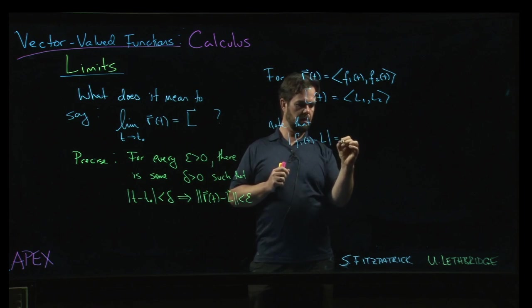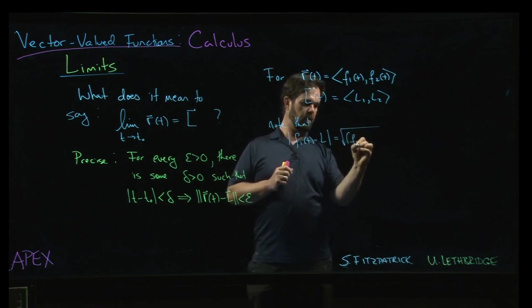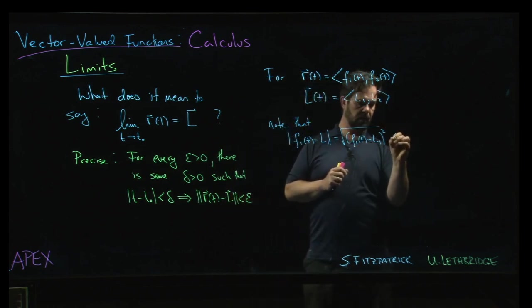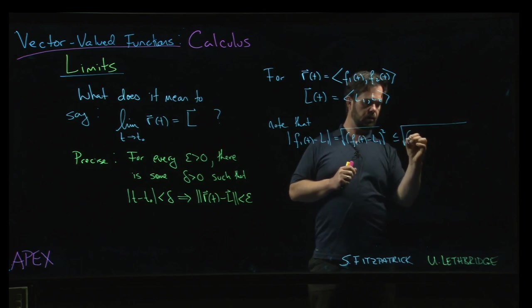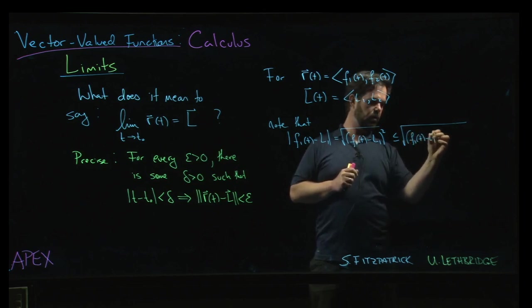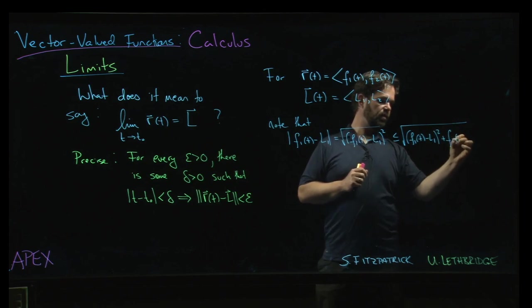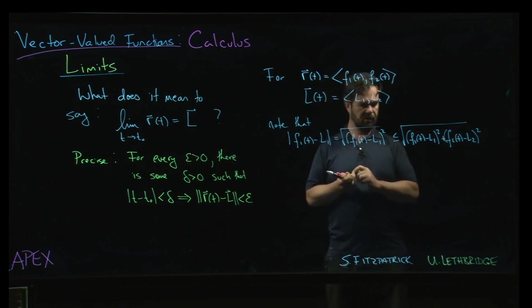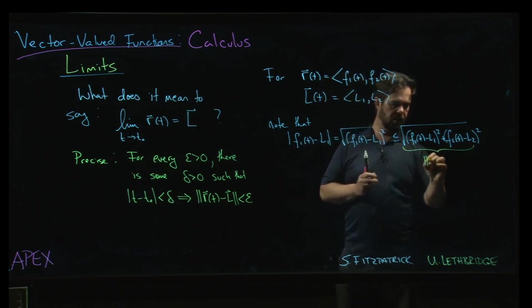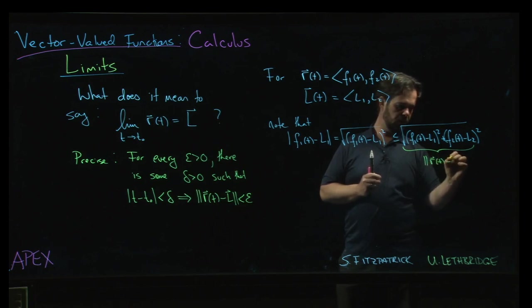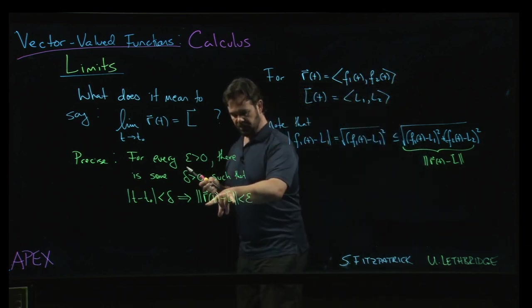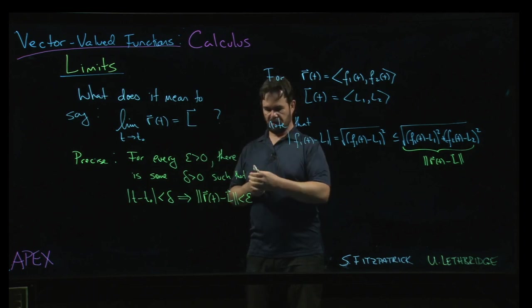Well, that's equal to the square root of [f1(t) minus L1] squared. And that is less than or equal to the square root of [f1(t) minus L1] squared plus [f2(t) minus L2] squared. And this is the magnitude of r(t) minus L. So if we can make this difference less than epsilon, we can also make this difference less than epsilon.